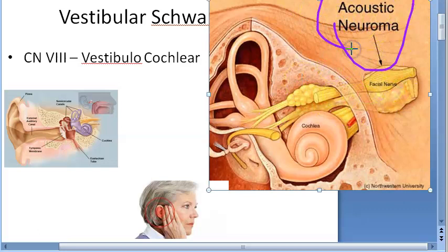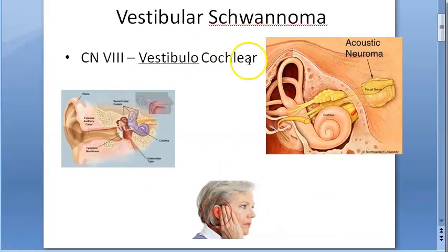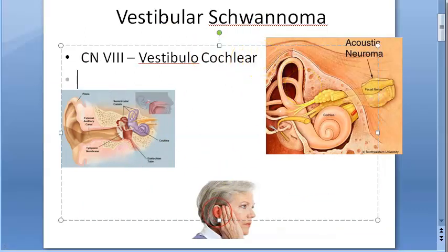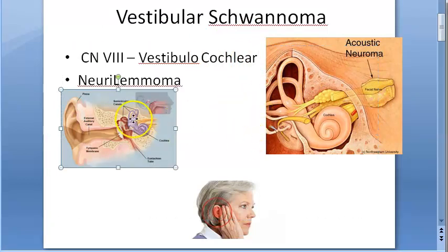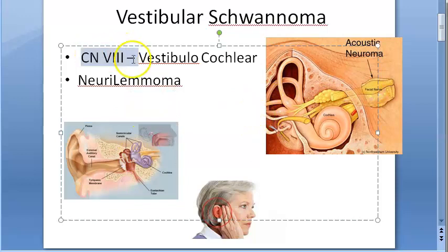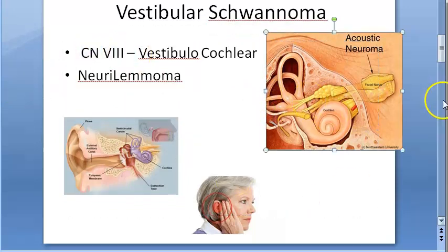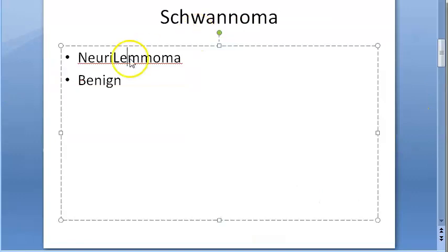The term 'acoustic neuroma' is actually wrong because this condition has nothing to do with hearing or the acoustic nerve. The correct term is vestibular schwannoma. It is also called neurylemoma or eighth nerve tumor.